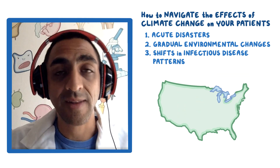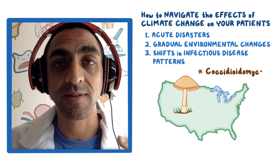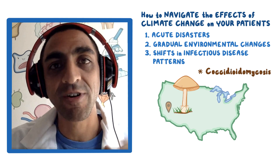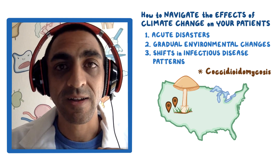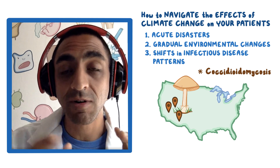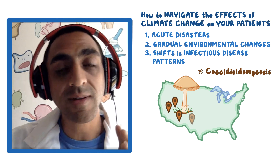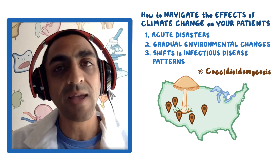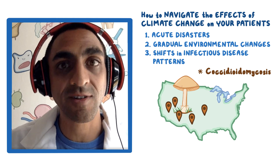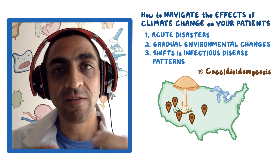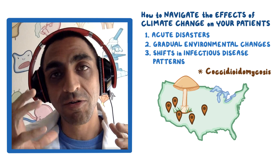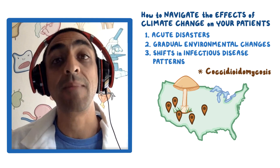Another example: the fungus coccidioidomycosis, found in the southwestern corner of the U.S. — California, Nevada, Arizona. Because of the heat waves going through, you're now seeing that fungus in other states. People are coming in with pulmonary nodules, getting red bumps and desert spots on their legs. If you're a physician not from those states and unfamiliar with it, you may misdiagnose or miss it entirely.